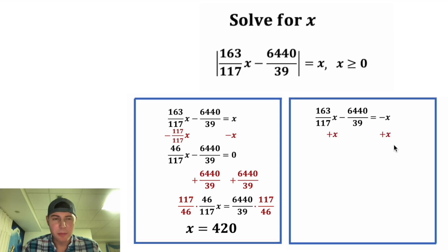On this bottom one, if we add x to both sides, first we need to give them a common denominator of 117. And our answer will have a denominator of 117. 163 plus 117 is 280. And then we can bring this down, and negative x plus x is equal to 0.